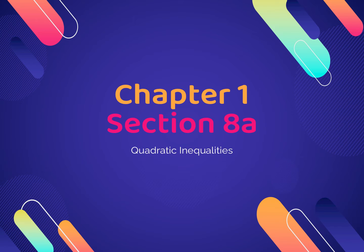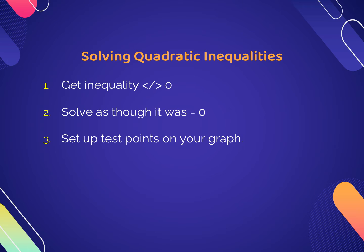Today we're going to start section 8, specifically the 1.8a notes on quadratic inequalities. There are three steps we're going to follow: first, get your inequality to have a 0 on either the left or right side; then solve it as if it's equal to 0; and then set up test points on our graph.